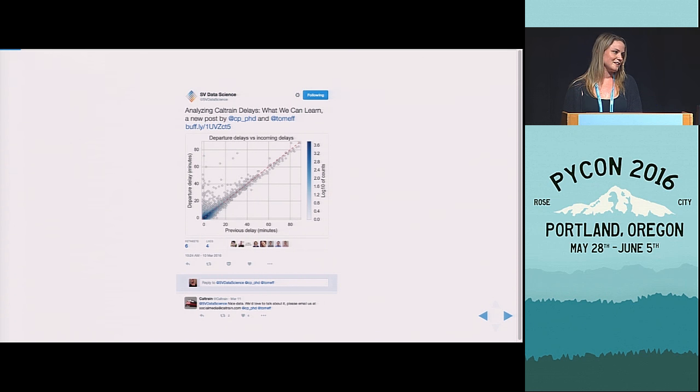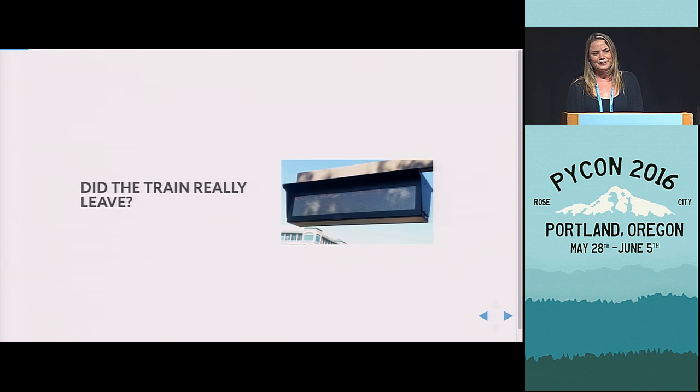And the kind of data that you would need to make some predictions would be arrival times of trains and departure times. Unfortunately, that's really not the kind of data we can actually get. Neither can Caltrain, funnily enough. They have a contractor who has that information. So the only information we really have is whatever shows on these status bars.